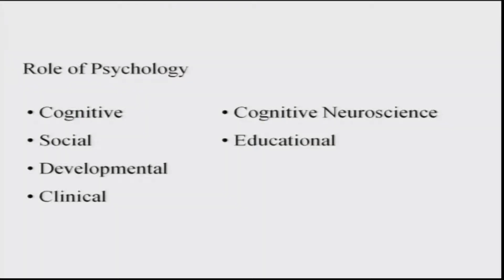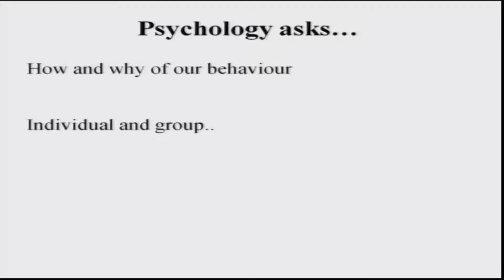The framework of normal behavior comes from psychology, and the abnormalities which arise with the functioning of the brain — whether because of illness or some other cause — are to be treated by psychiatry. For a psychiatrist, knowing psychology is the mandatory first step. We need psychology to understand cognition, social behavior, development, clinical practice, and education. It asks the how and why of individual and group behavior, and defines what is normal — because unless we define normalcy, we cannot define what is abnormal.